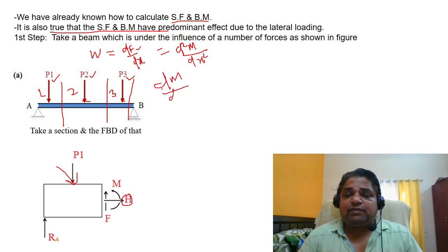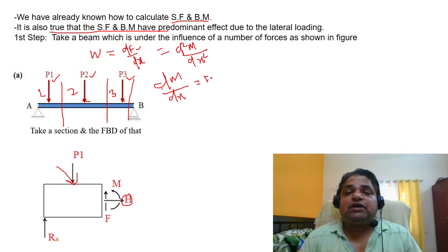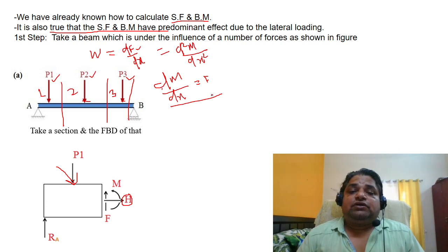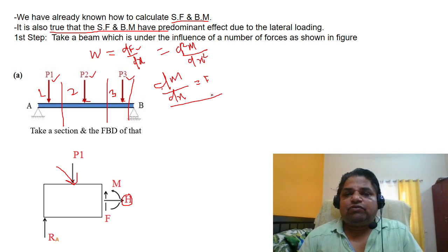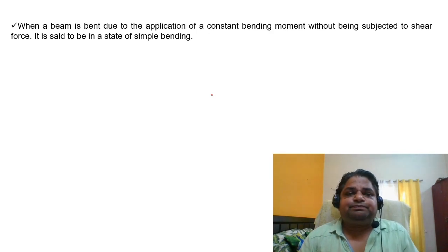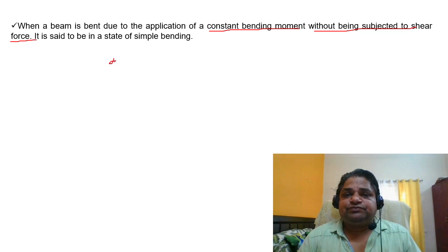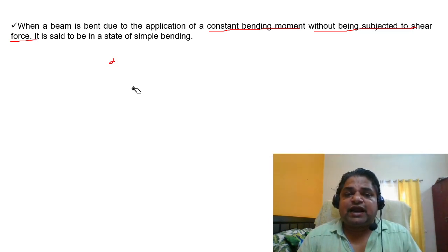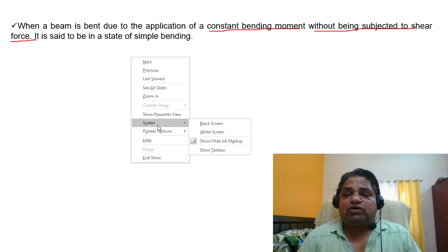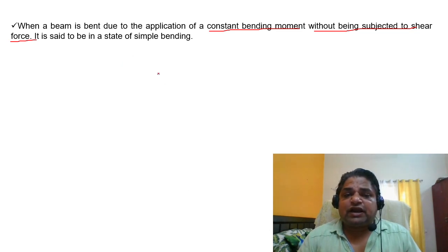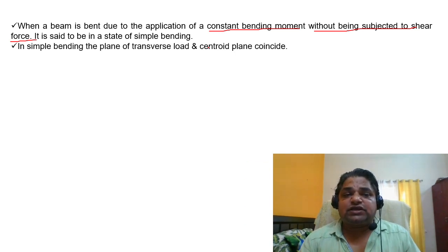In simple bending, when a beam bends due to a constant bending moment — without being subjected to shear — since dM/dx is not changing, the rate of change of the bending moment is zero. If the rate of change is zero, then there will be no shear stress. In simple bending, the plane of the transverse load and the centroidal plane must coincide with each other.